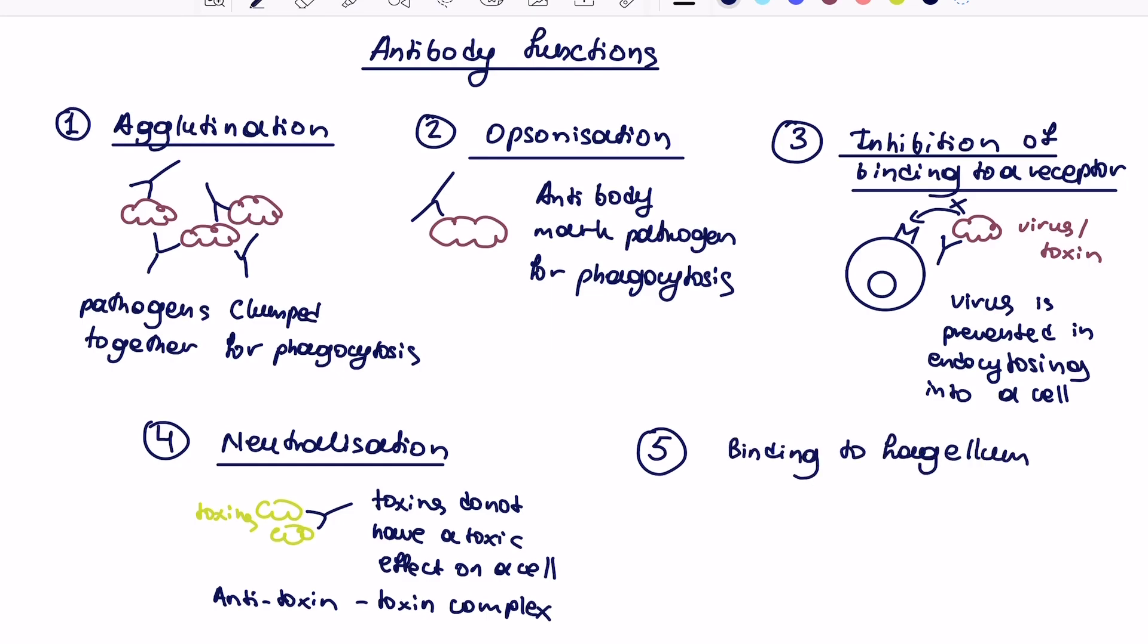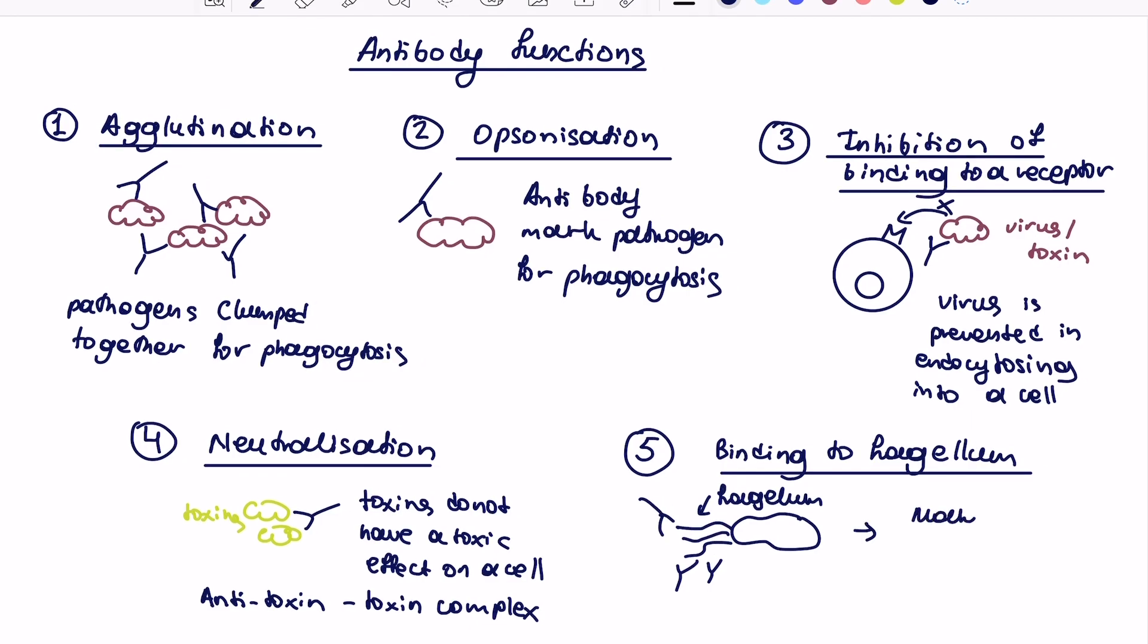This brings us to the final function number five, binding to flagella, which is probably my favorite. So in this case, what happens is that the antibodies will bind to the bacterial flagella, making it less mobile. So then it's less likely to go and invade different tissues and to make organisms ill.